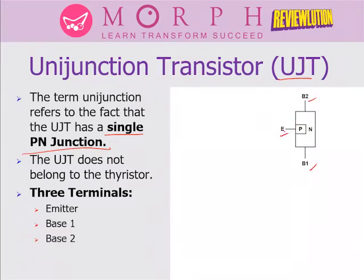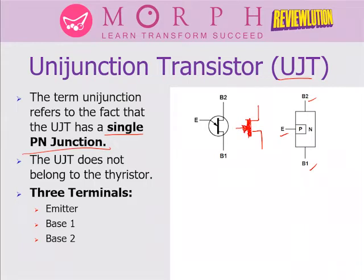The schematic symbol for the UJT looks similar to what we call a JFET. The only difference between the UJT and JFET is that the arrow in the JFET is straight, whereas in the UJT the arrow is diagonal. That is the difference between a FET and UJT.